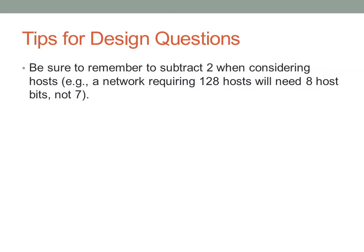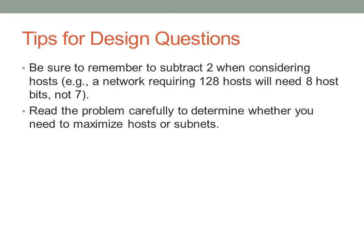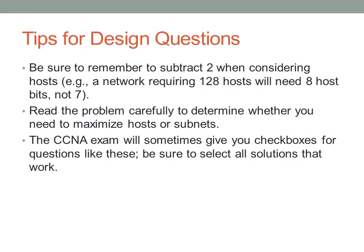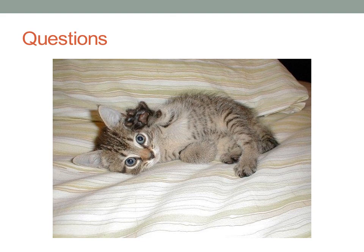Here are some general tips for design questions. Remember to subtract 2 when calculating hosts, to account for the broadcast and network addresses. For example, if you need 128 hosts, 7 bits aren't enough — you need 130 addresses total, which pushes you to 8 bits. Also read the problem carefully to determine whether you need to maximize hosts or subnets. The CCNA exam may give you checkboxes where more than one answer is correct — make sure you pick all valid solutions. That wraps up this subnetting practice. Feel free to put questions in the comments, and I look forward to seeing you in the next presentation.